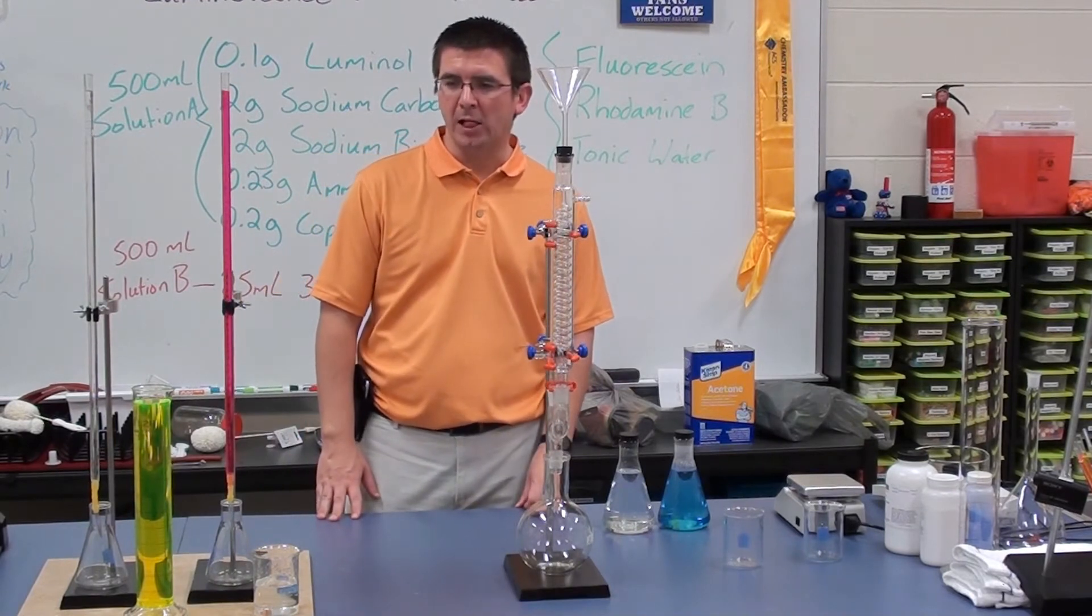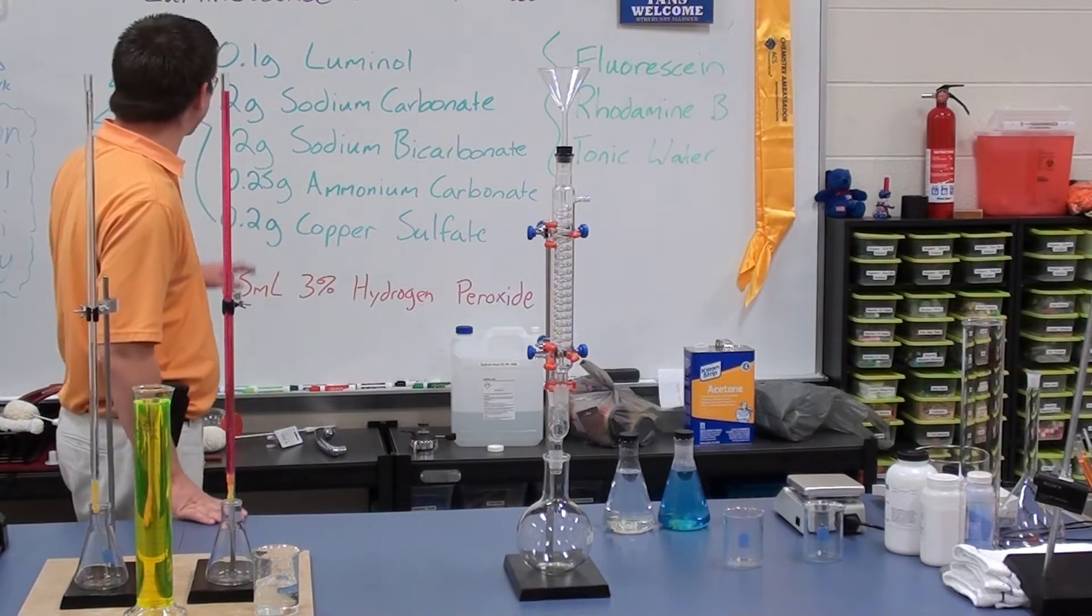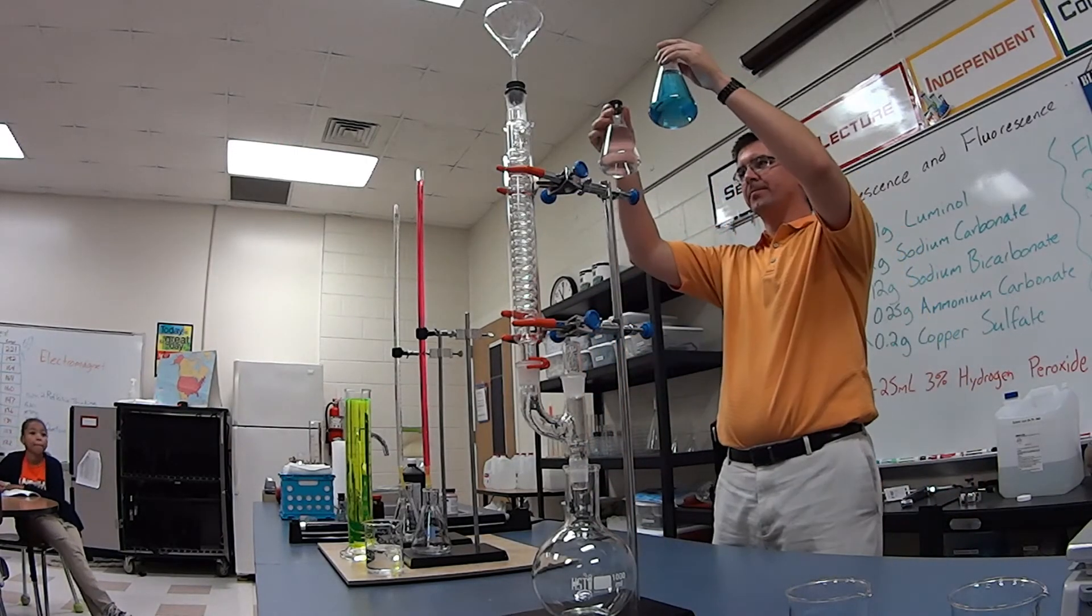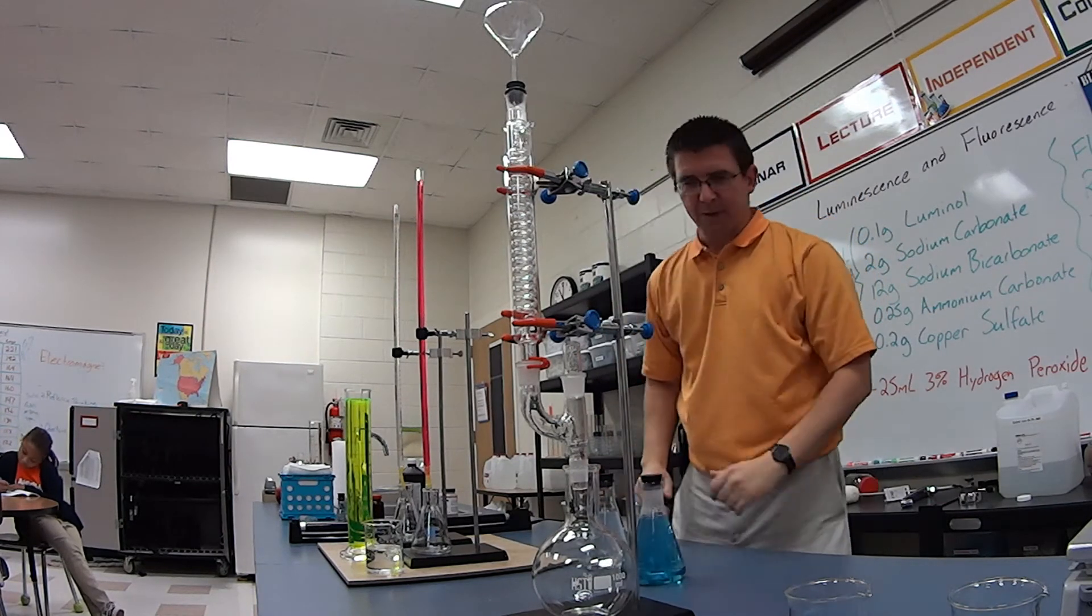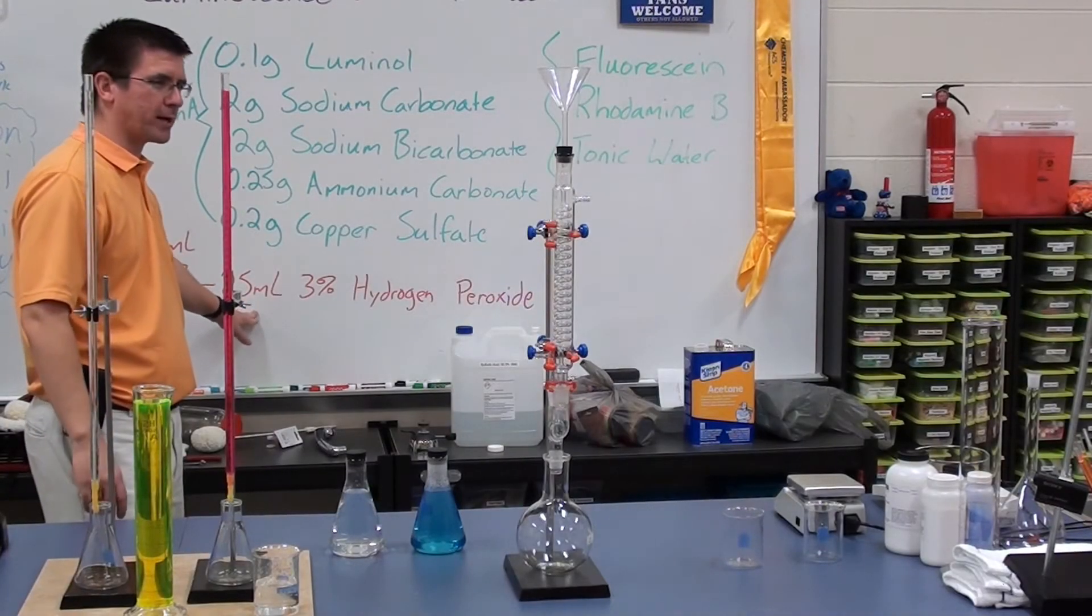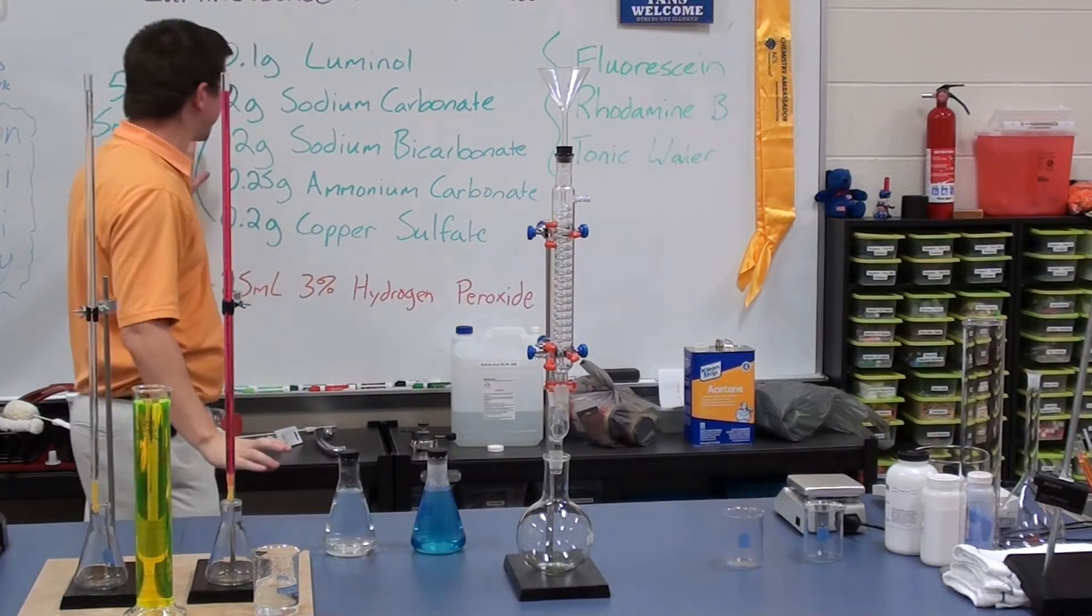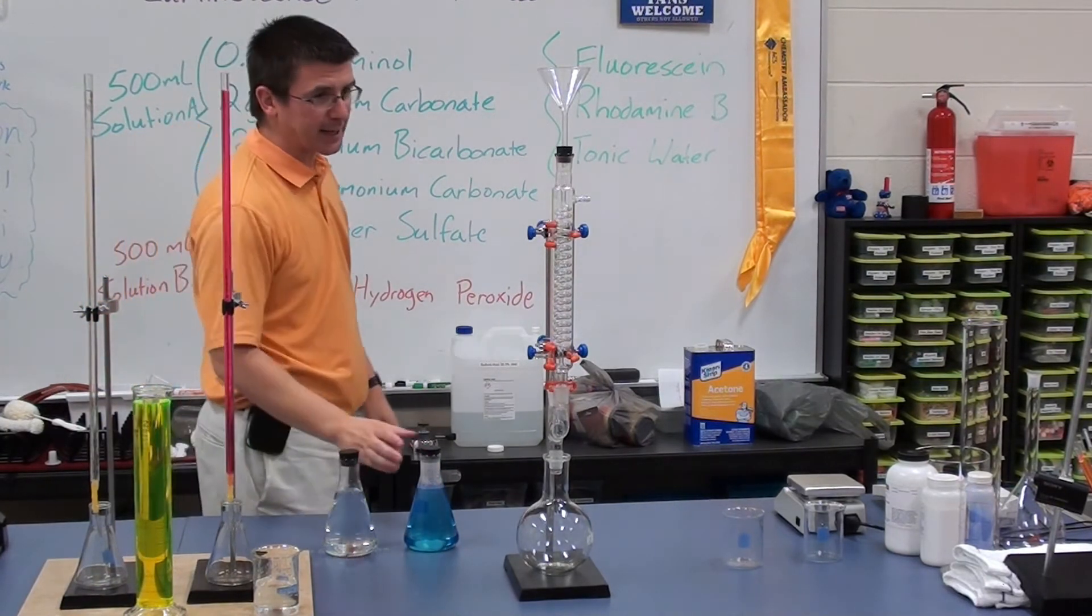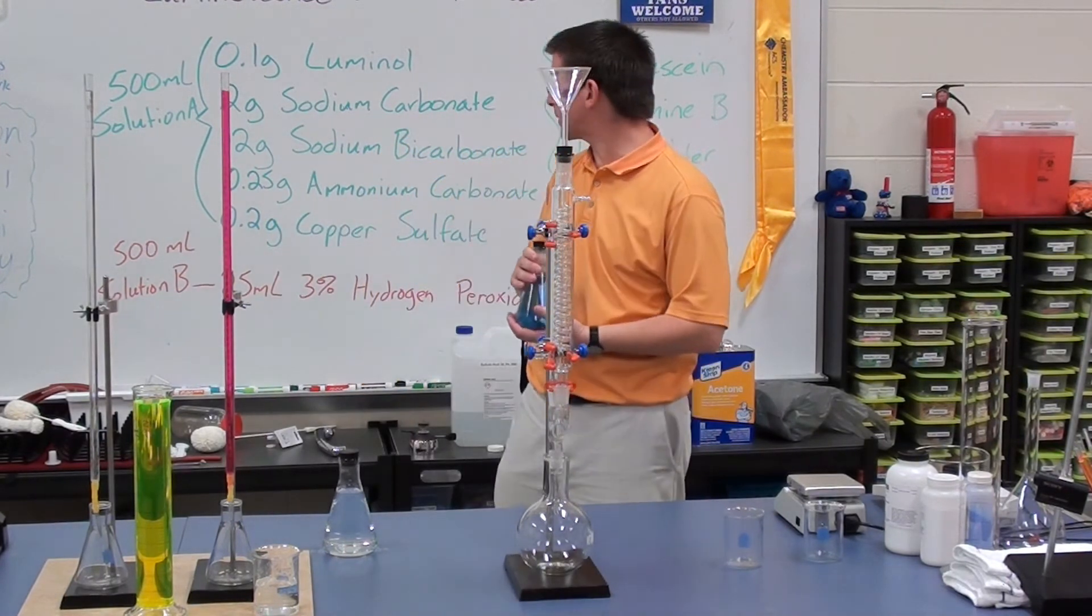We looked at the property of fluorescence. Now we're going to look at the property of luminescence. To do luminescence, we need several different things. I have two liquids: a blue liquid and a clear liquid. The clear liquid is pretty simple, just 25 milliliters of peroxide and the rest water. The first one has five different chemicals: luminol, sodium carbonate, sodium bicarbonate, ammonium carbonate, and copper sulfate.